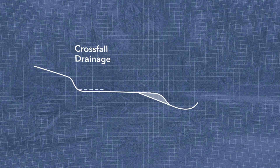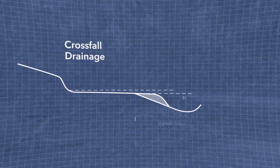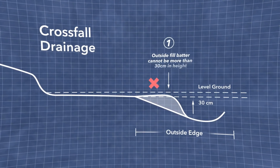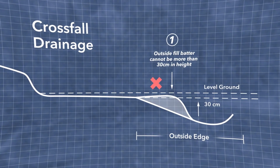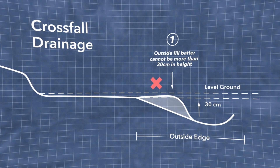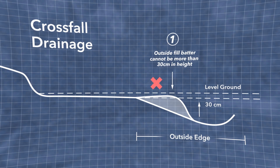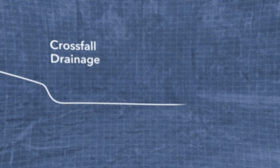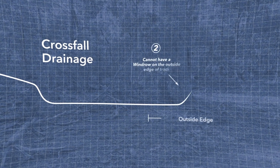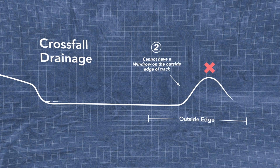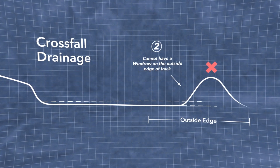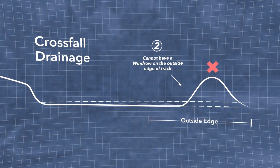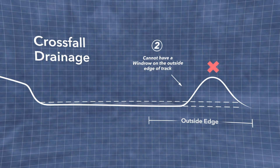Two points to note: it's not suited where the fill batter on the outside edge is more than about 30 centimeters, and it's also not good to have a windrow running down the outside. We want to make sure there is no windrow to concentrate flow.